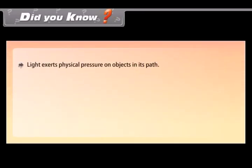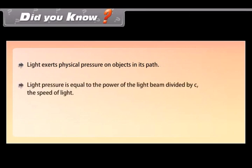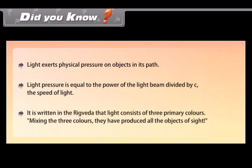Did you know? Light exerts physical pressure on objects in its path. Light pressure equals the power of the light beam divided by C, the speed of light. It is written in the Rig Veda that light consists of three primary colors, and by mixing the three colors, all the objects of sight are produced.